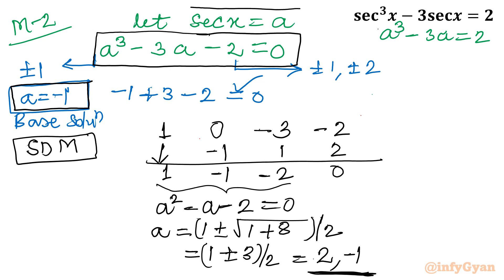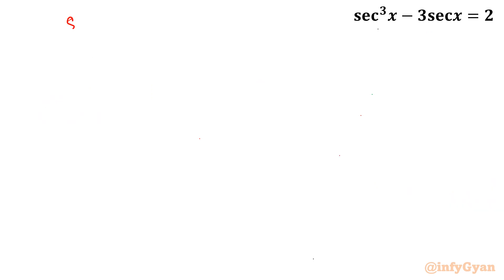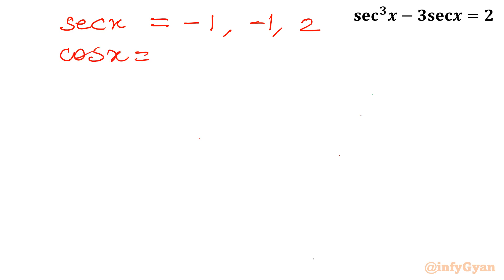Recalling that a = sec x, the solutions from Method 2 are sec x = −1 and sec x = 2. These match Method 1 exactly. Converting to cosine: cos x = −1 and cos x = 1/2. Now let us find the principal and general solutions.